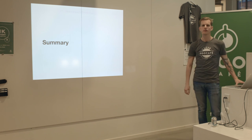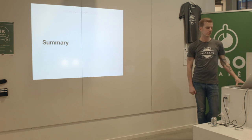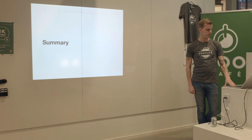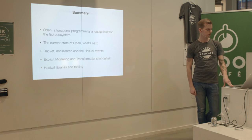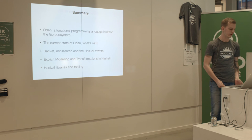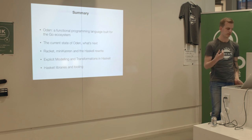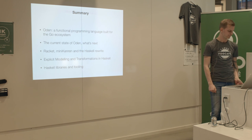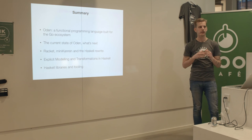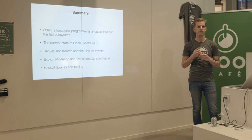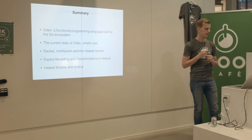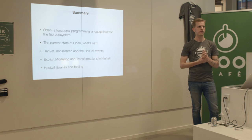To wrap up, we've talked about Oden, the functional programming language for the Go ecosystem, where it's at right now and what's next. We talked about Racket, MiniKanren, and why I chose to rewrite the compiler in Haskell. We talked about explicit modeling and transformations in Haskell.